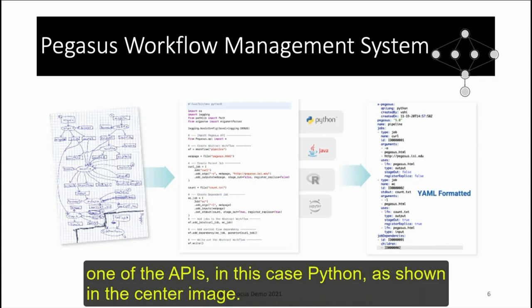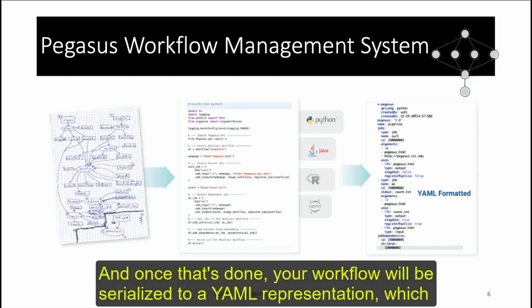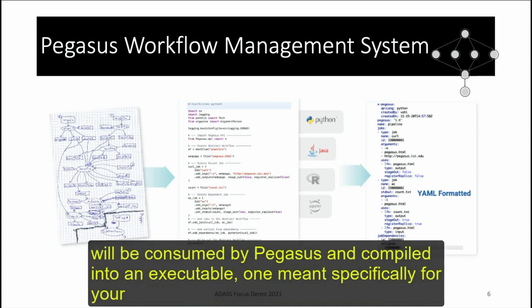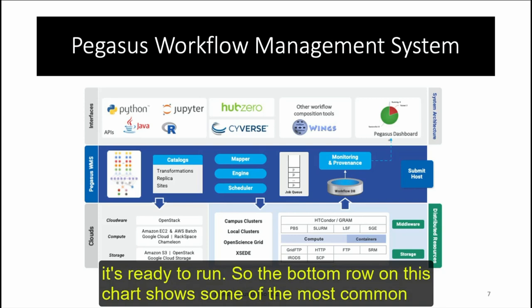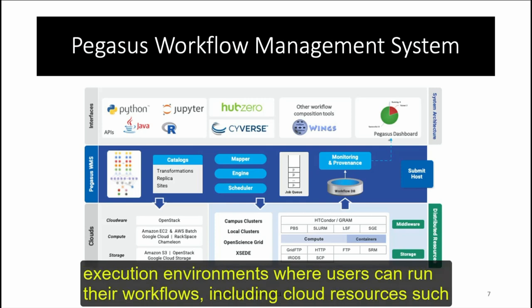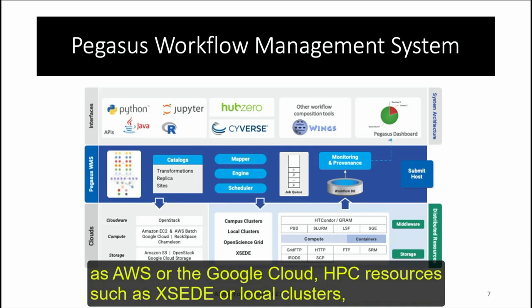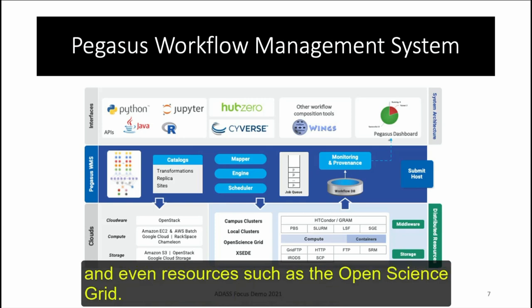Once described, the workflow is serialized to a YAML representation consumed by Pegasus and compiled into an executable form meant specifically for your execution environment. Common execution environments include cloud resources such as AWS or Google Cloud, HPC resources such as XSEDE or local clusters, and even resources such as the Open Science Grid.